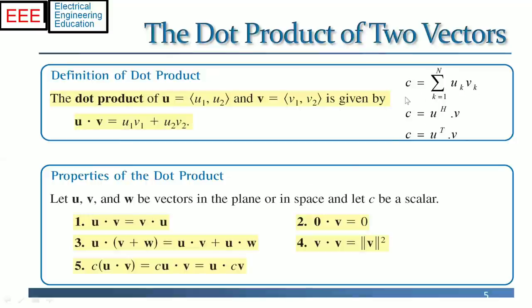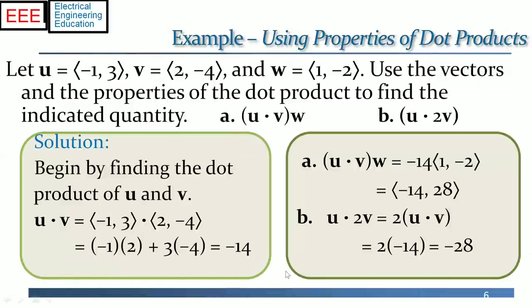The symbolic notation is very important and helps to understand what is happening in a signal processing algorithm. Some properties of the dot product are shown. Let's see an example. We have three vectors including U equal to the sequence minus 1, 3, V equal to the sequence 2, minus 4, and W equal to 1, minus 2. The solution to find the dot product of U and V results in the scalar minus 14.